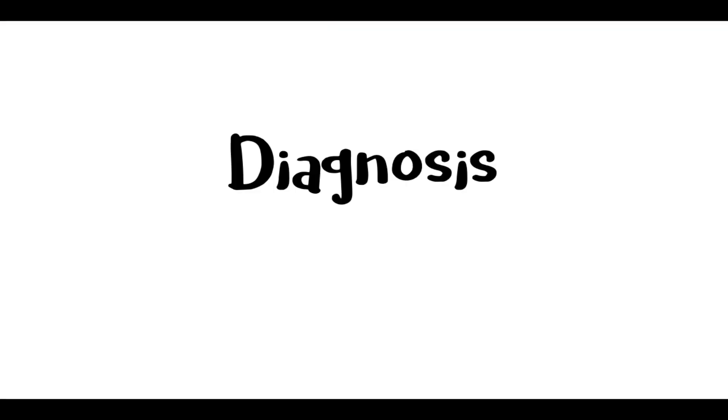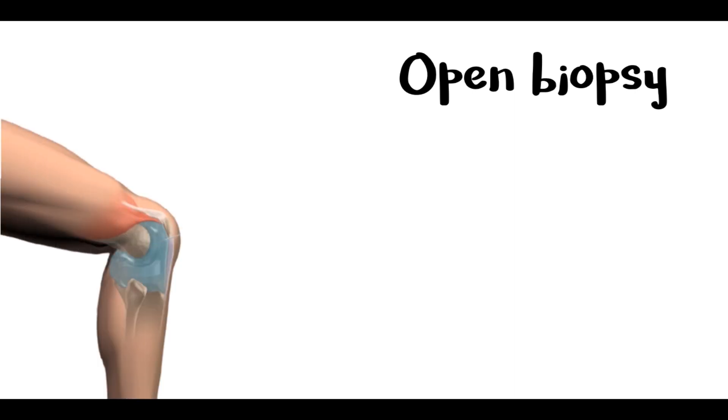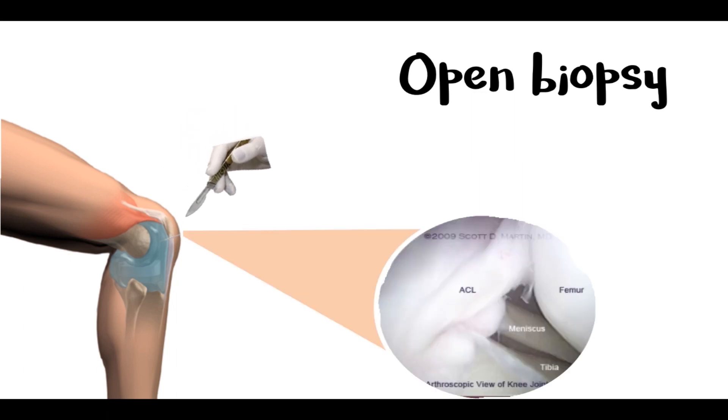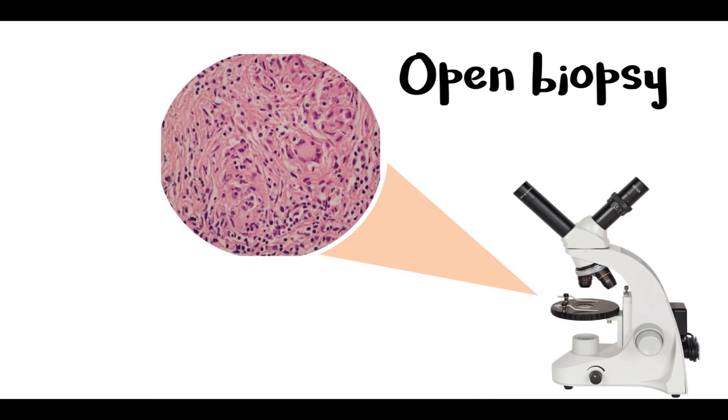A high index of suspicion is necessary for the diagnosis of TB arthritis. The gold standard in diagnosis is histopathology, and this is done by performing an open biopsy, testing positive in about 80% to 90% of cases. Under the microscope, the synovial biopsy will present with hallmark granulomatous features. There may also be lymphocytes and giant cells showing caseation.